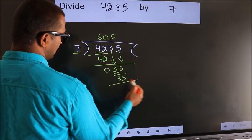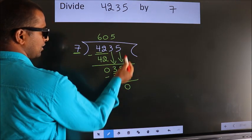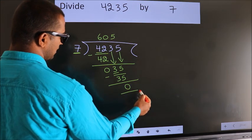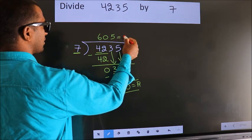When we subtract, we get 0. No more numbers to bring it down, so we stop here. This is our remainder. This is our quotient.